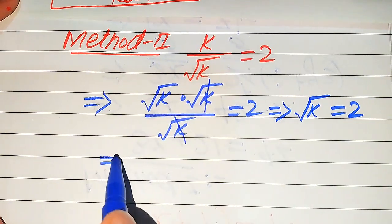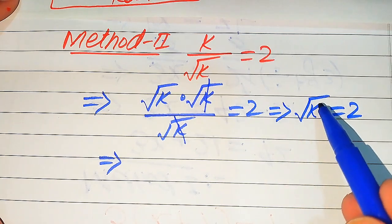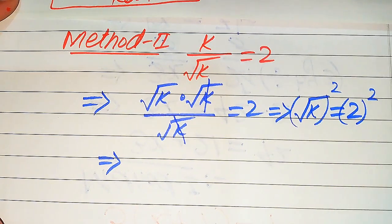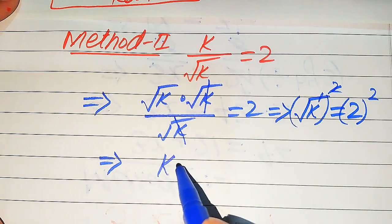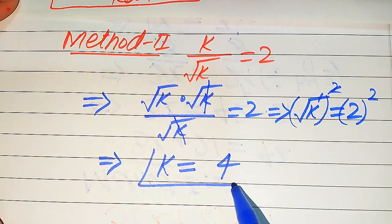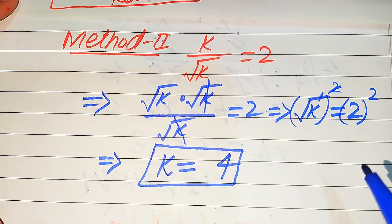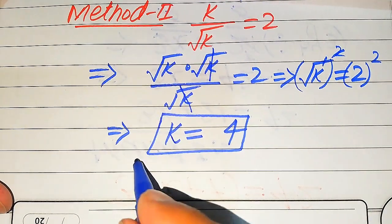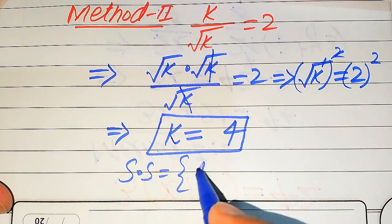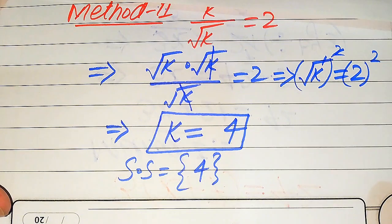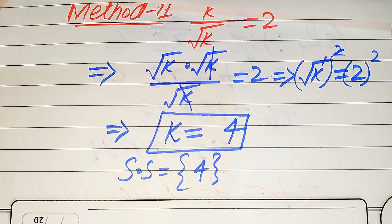To remove the square root sign, we square both sides. The square root and the square cancel on the left, and 2 squared equals 4 on the right, giving k equals 4. We already verified this value in Method 1, and it satisfies the original equation. So we conclude that k equals 4 is the solution set of the given equation. Thank you so much for watching this video — please subscribe to my channel for more videos.